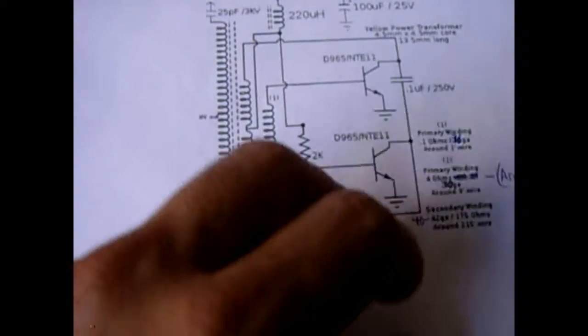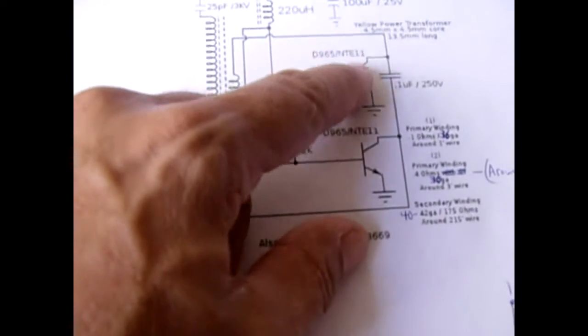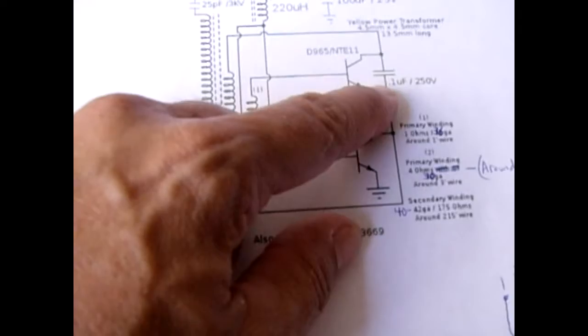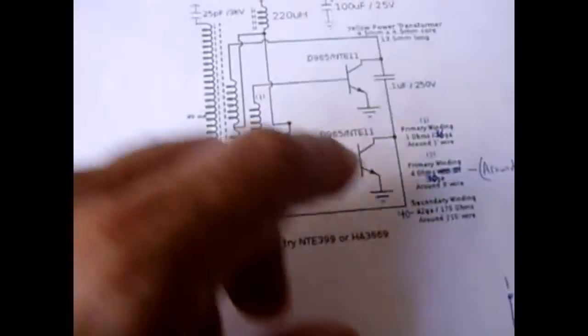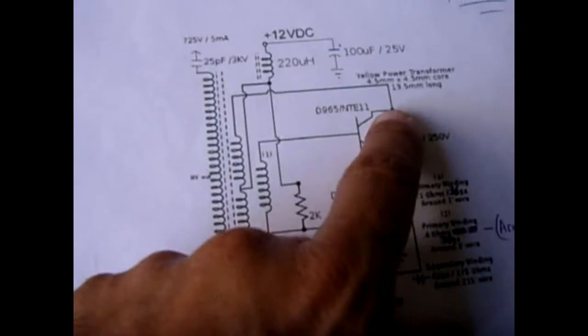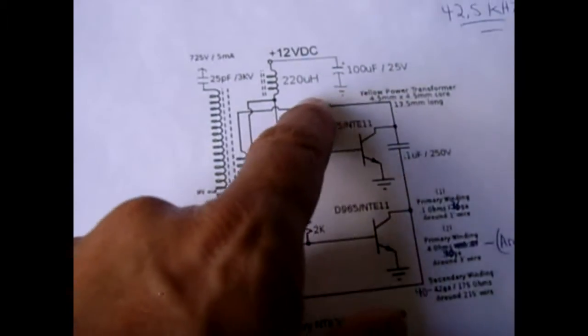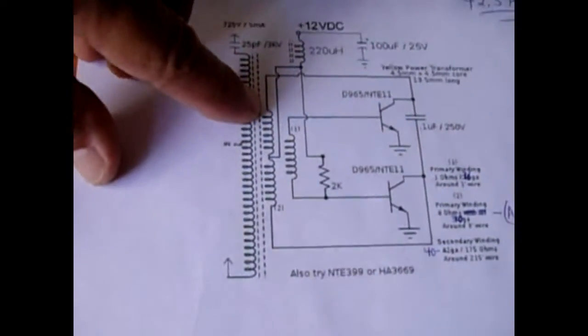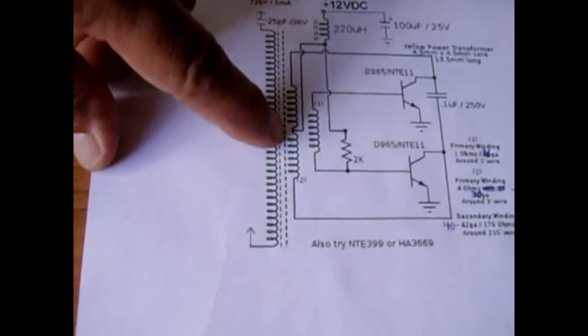Both emitters go to ground. Between both collectors you will have a 0.1 microfarad 250 volt capacitor. And this collector goes all the way over and it comes down into this bifilar wound coil right here.